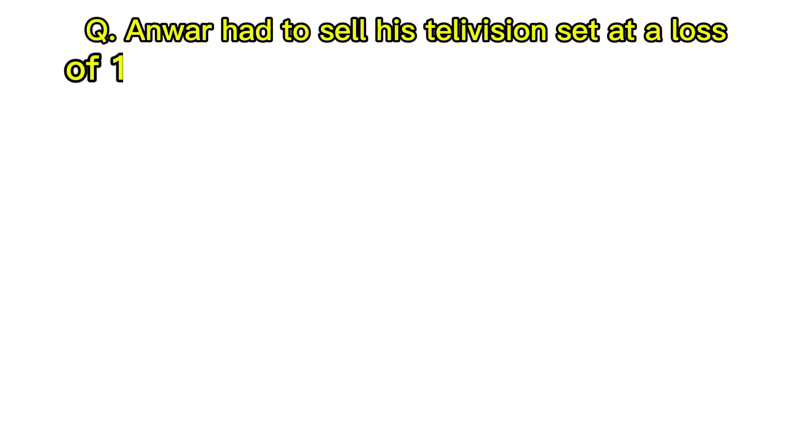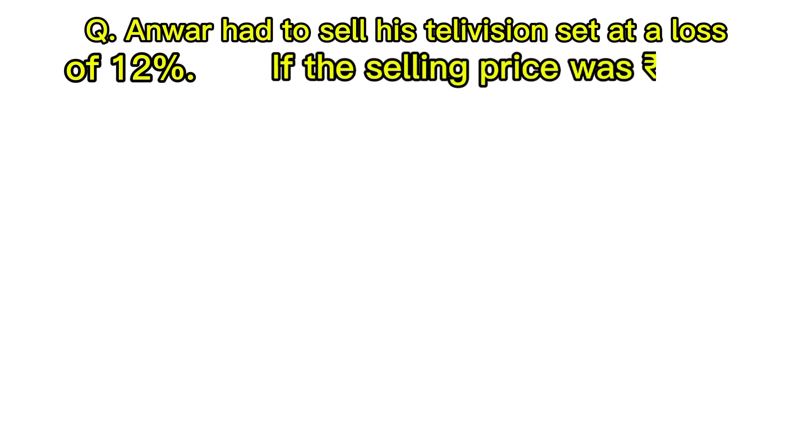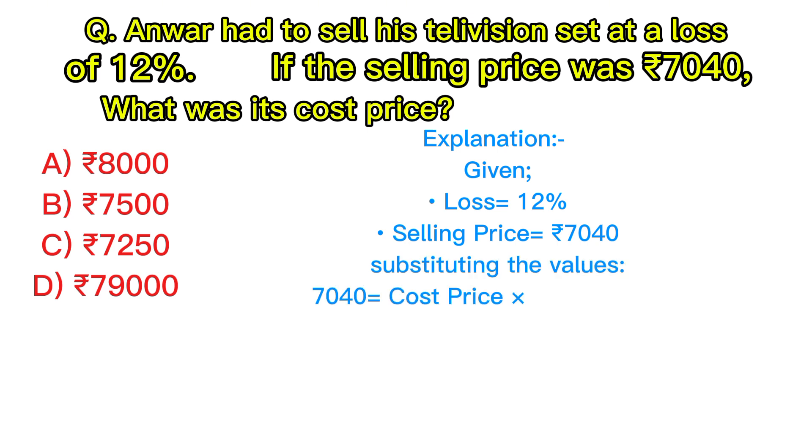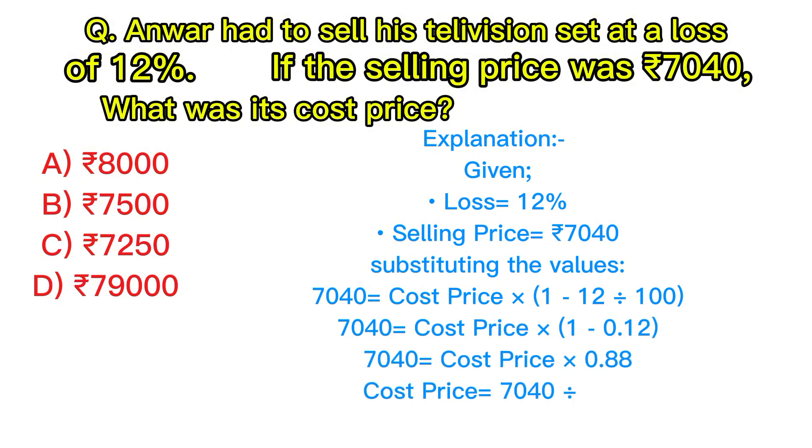Anwar had to sell his television set at a loss of 12 percent. If the selling price was ₹7,040, what was its cost price? Explanation: Given loss equals 12%, selling price equals ₹7,040. Substituting the values: ₹7,040 equals cost price times (1 minus 0.12), equals cost price times 0.88. Cost price equals ₹7,040 divided by 0.88, equals ₹8,000. Answer: A, ₹8,000.